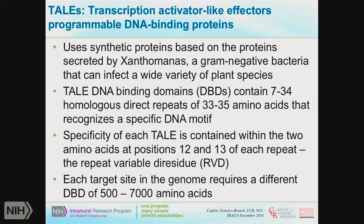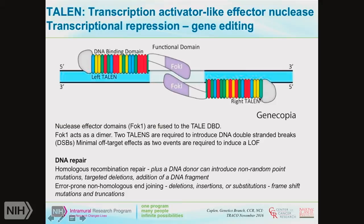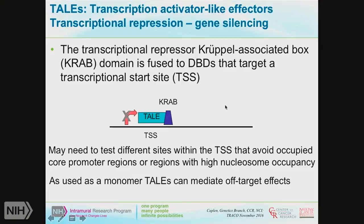The TALEN structure consists of a left TALEN and a right TALEN, each with multiple DNA binding domains. These are fused to nuclease effector domains from FokI, which act as a dimer and introduce DNA double-strand breaks. With both domains, you get very few off-target effects. If you have a donor DNA and homologous recombination repair, you can introduce non-random point mutations, targeted deletions, or add in a whole DNA fragment. If repaired through error-prone non-homologous end-joining, you can get deletions, insertions, or substitutions, frameshifted mutations and truncations — all permanent changes to the genome.